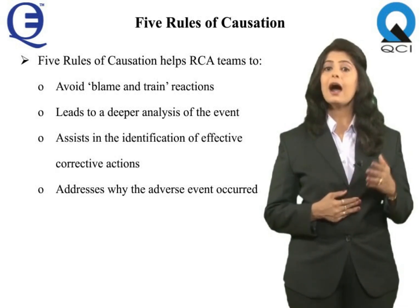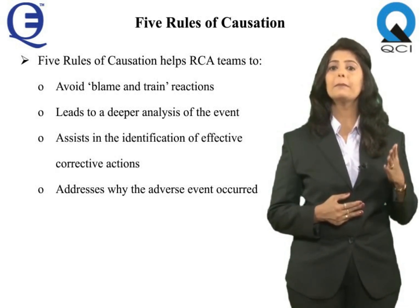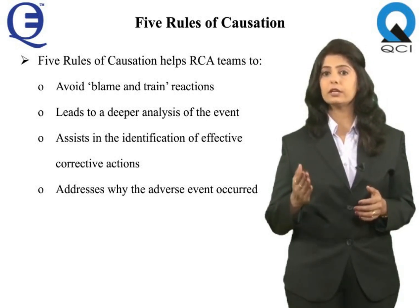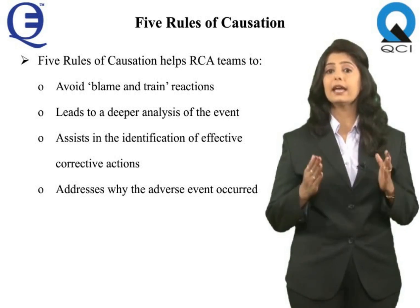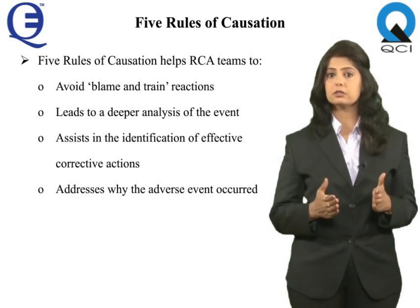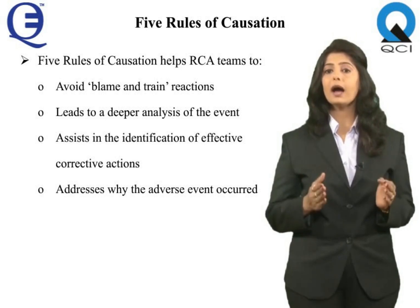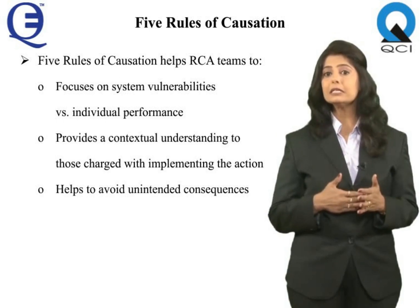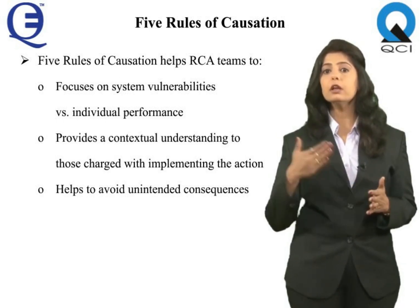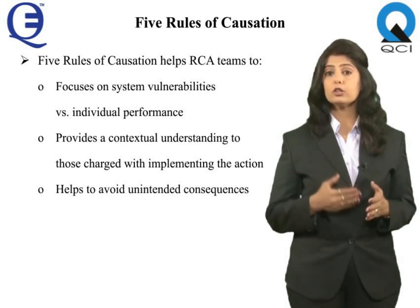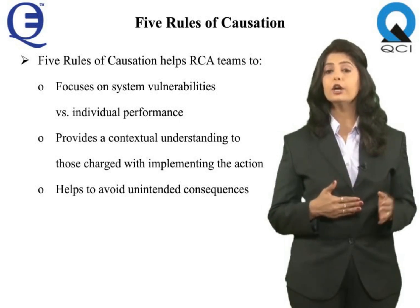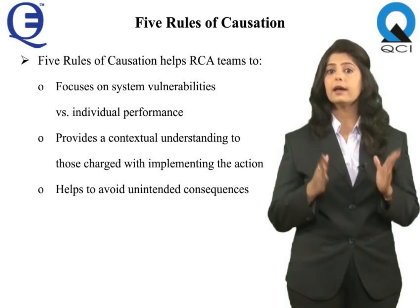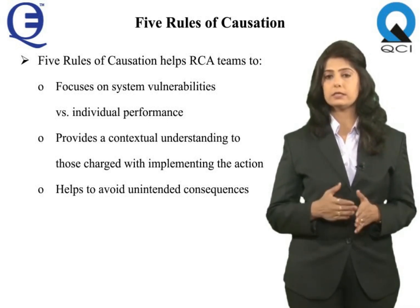Use of the 5 Rules of Causation helps RCA teams avoid blame-and-train reactions, leads to a deeper analysis of the event, assists in the identification of effective corrective actions, addresses why the adverse event occurred, and focuses on system vulnerabilities versus individual performance. It also provides contextual understanding to those charged with implementing the action and helps to avoid unintended consequences.